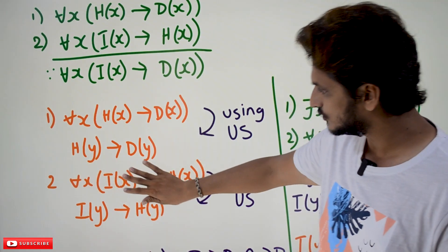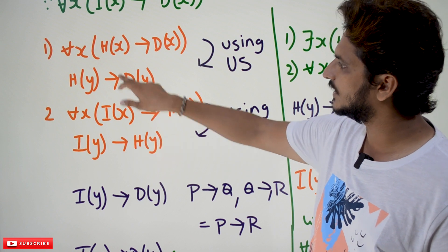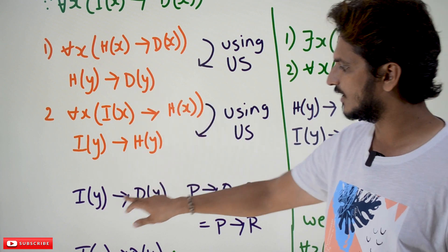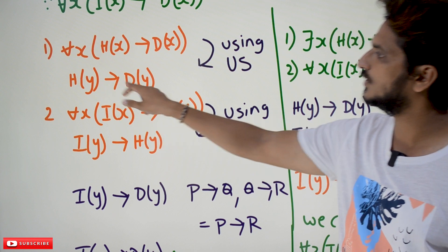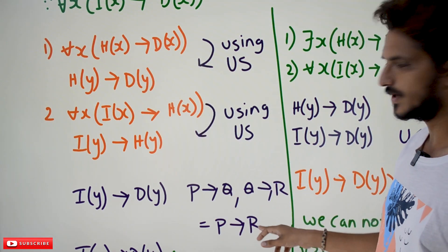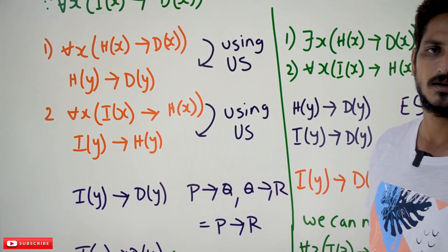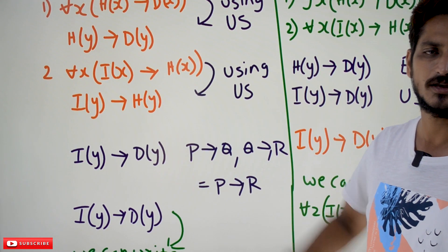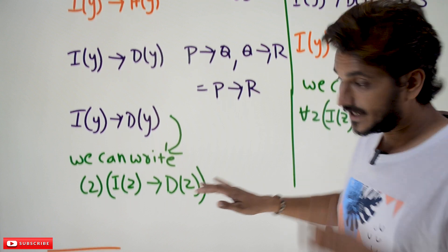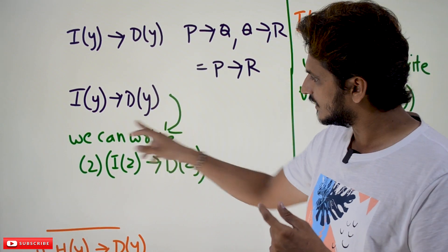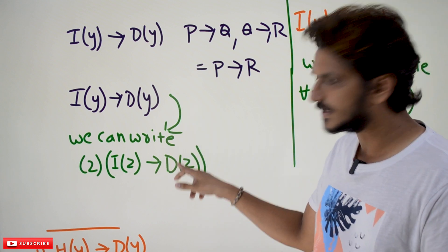From these two statements — h(y) implies d(y), and i(y) implies h(y) — we can write i(y) implies d(y). This is in the form of p implies q, q implies r, so we can conclude p implies r. Now, from i(y) implies d(y), can we conclude that for all z, i(z) implies d(z)? Yes — this is what universal generalization means, and we can write it in this situation.